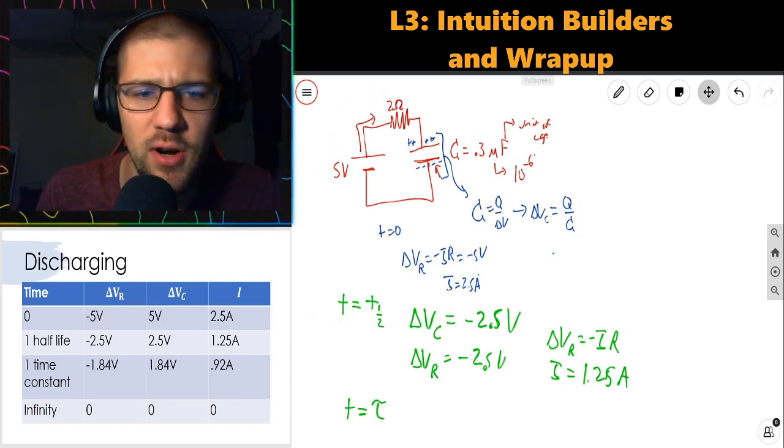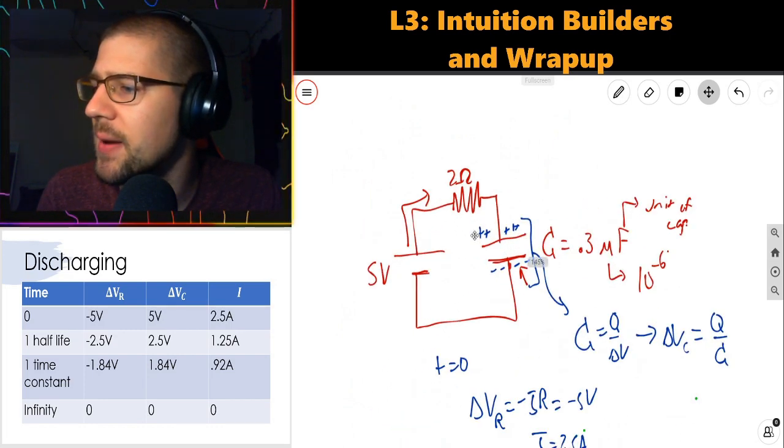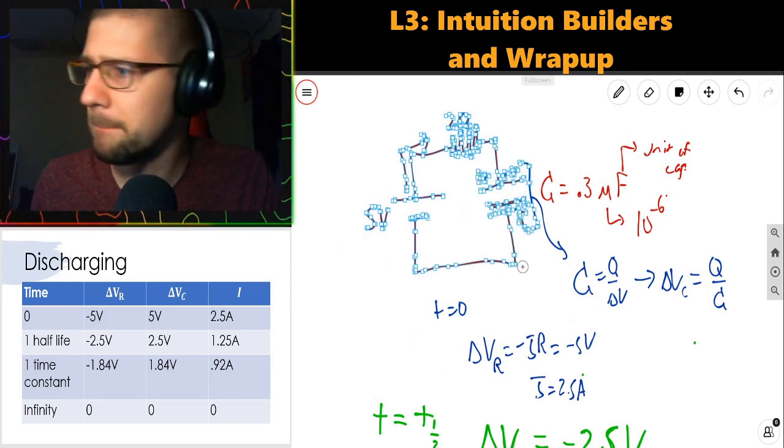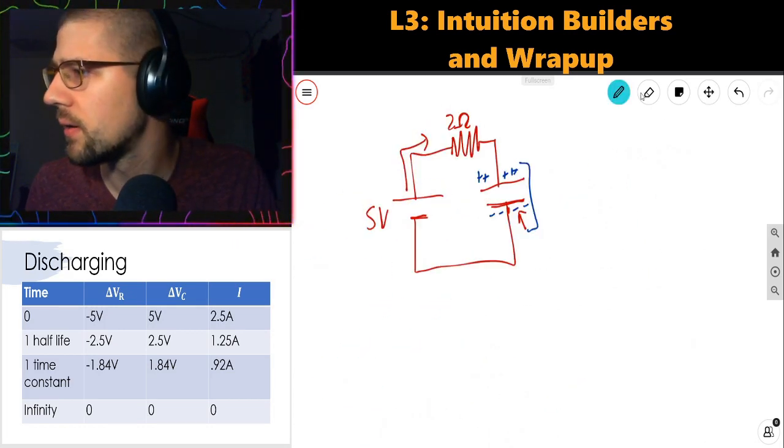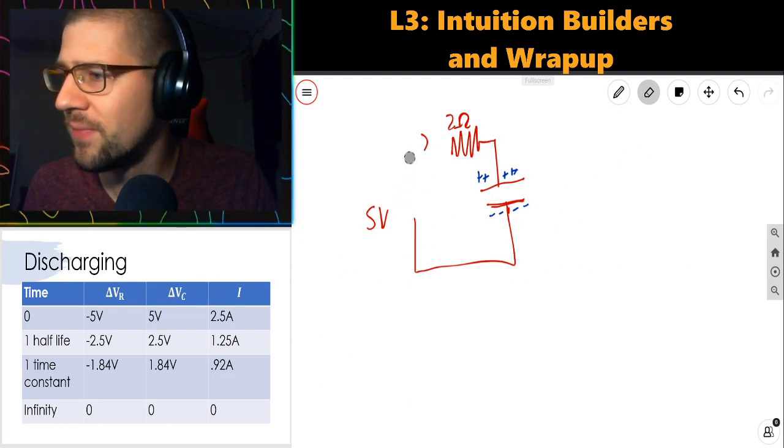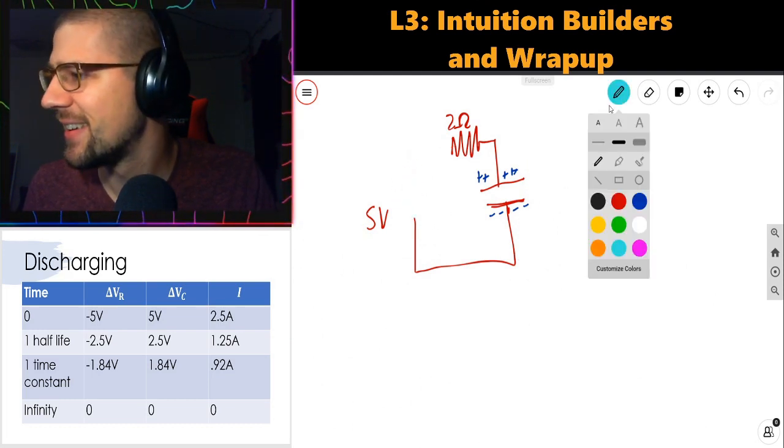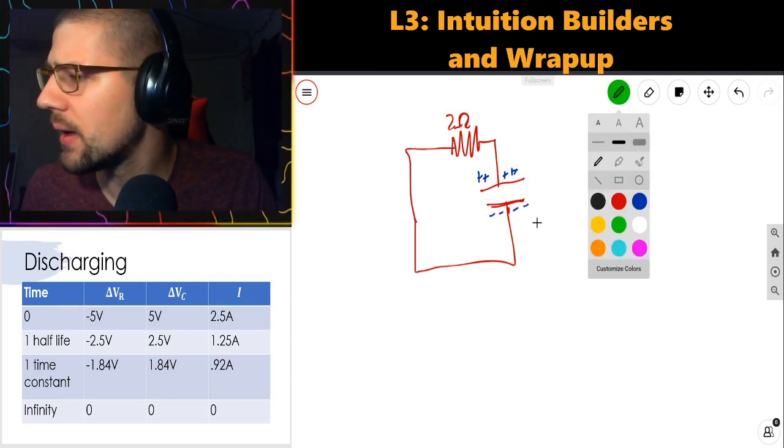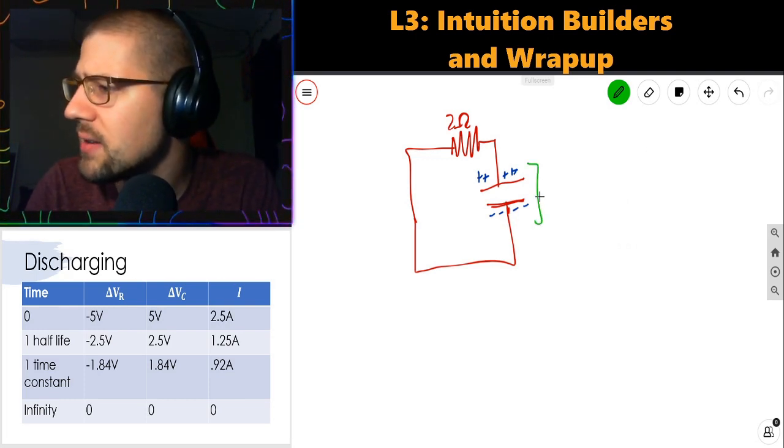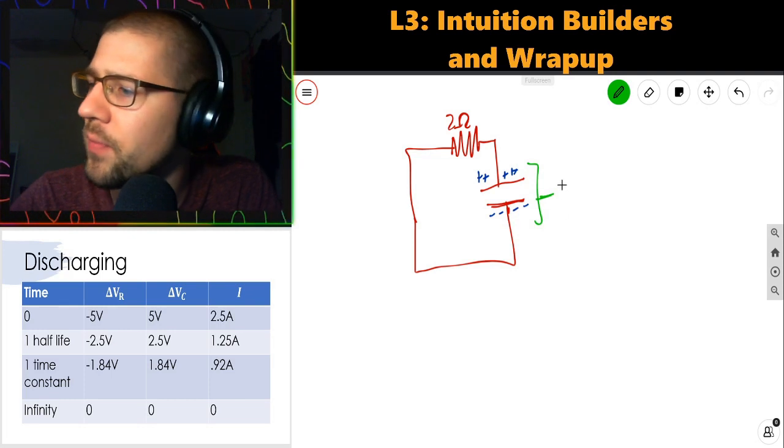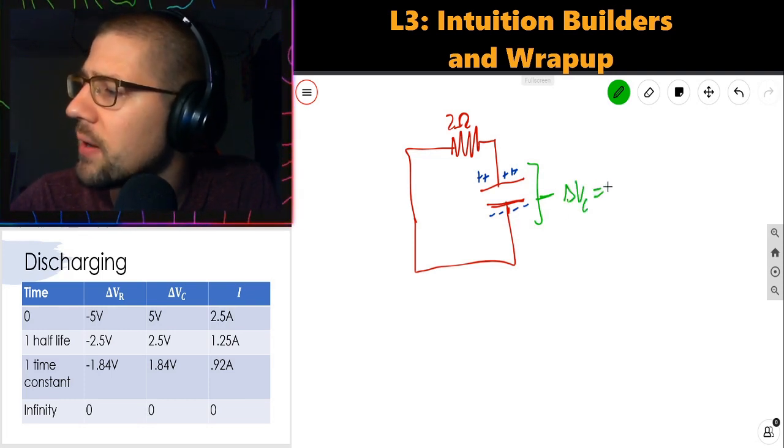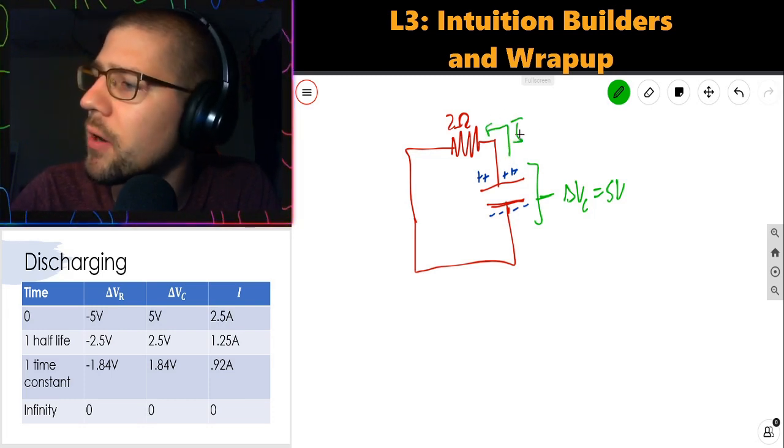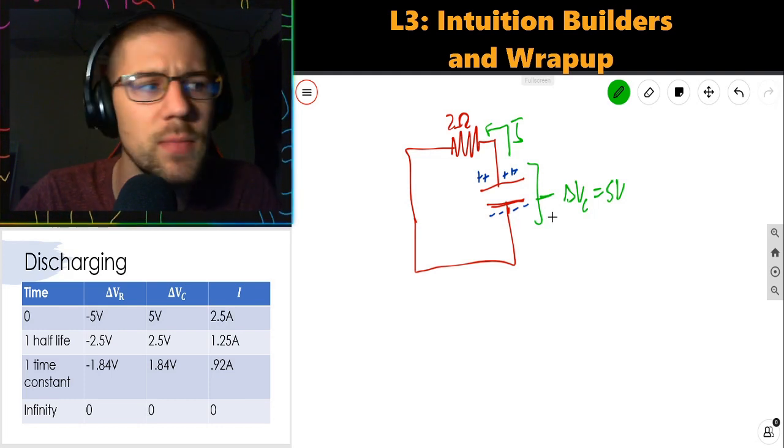The next example is for discharging. So it's pretty much the same circuit, except for this time I'm going to copy the circuit over real quick and I'm just going to get rid of the battery. Now at this point, the capacitor is completely charged. So at T equals 0, I'm calling this a new time equals 0. Current is going to flow the opposite way now, counterclockwise.